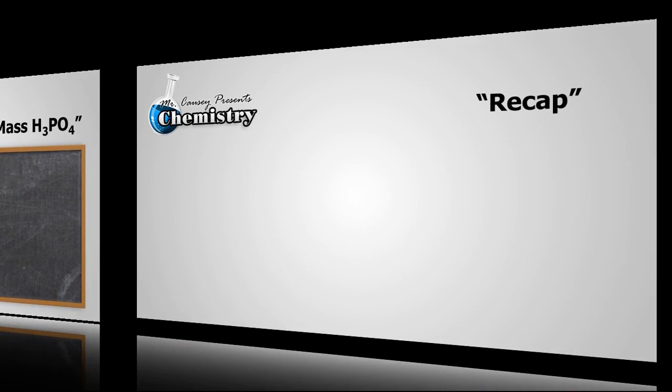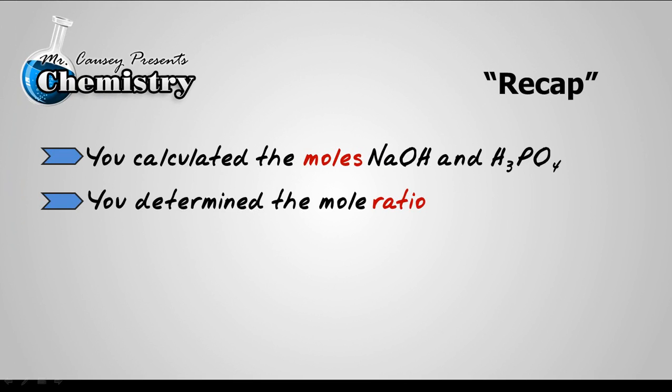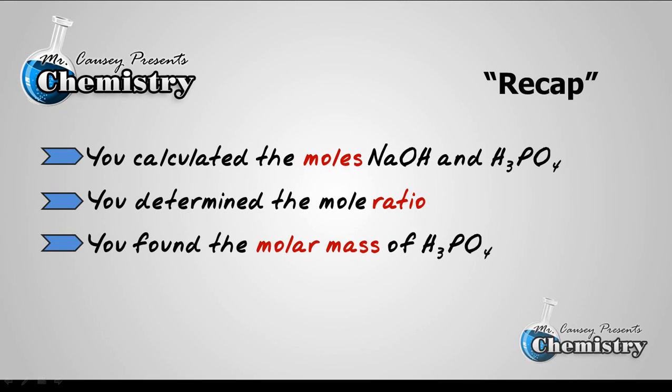Let's recap. You calculated the moles of sodium hydroxide and phosphoric acid. You determined the mole ratio. And then you found the molar mass of phosphoric acid. And then you calculated the mass of the H3PO4 present.